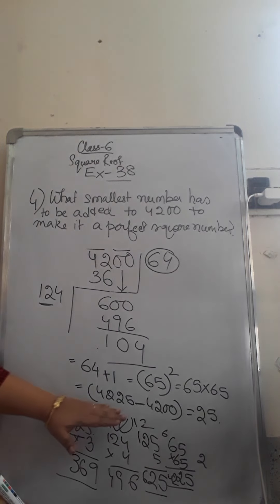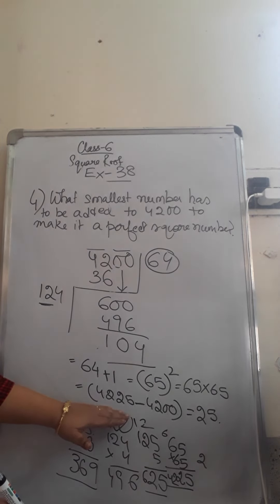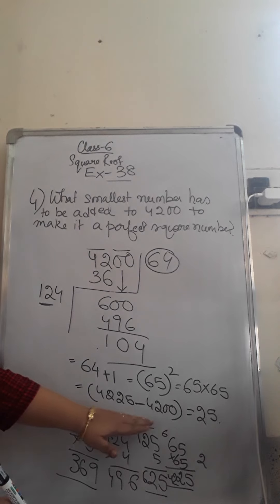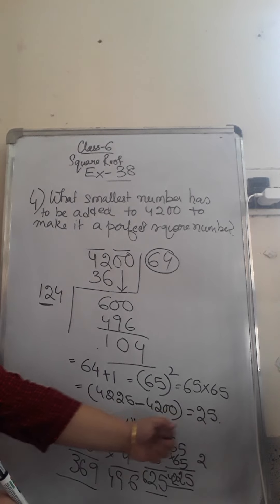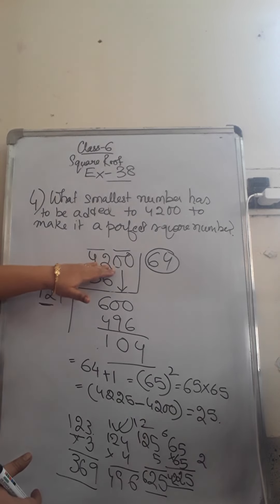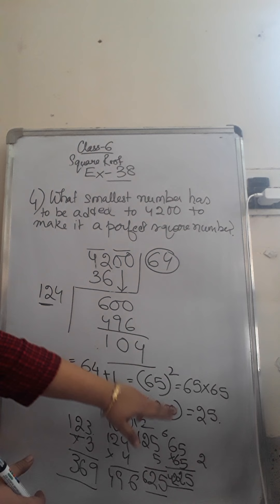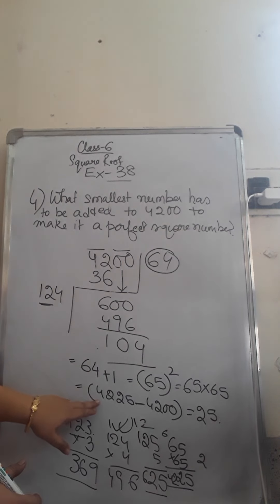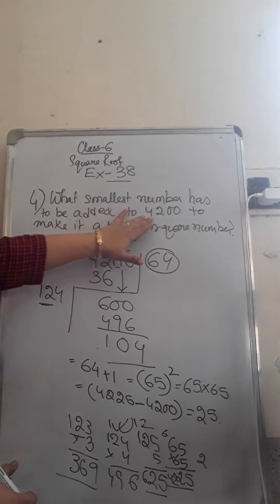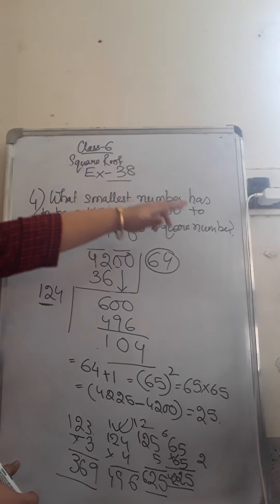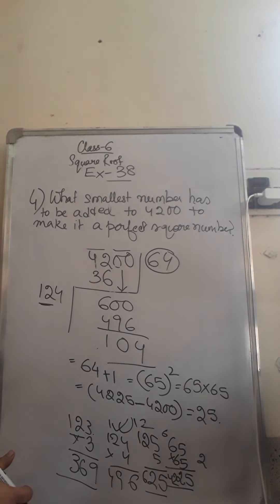So from the next perfect square number, we have to subtract the given number and we have to check how much we need to add. So with 4200, if we add 25, then only we can go to the next perfect square number, 4225. So we know that in the question it was given, something has to be added with 4200 to give the next perfect square number.